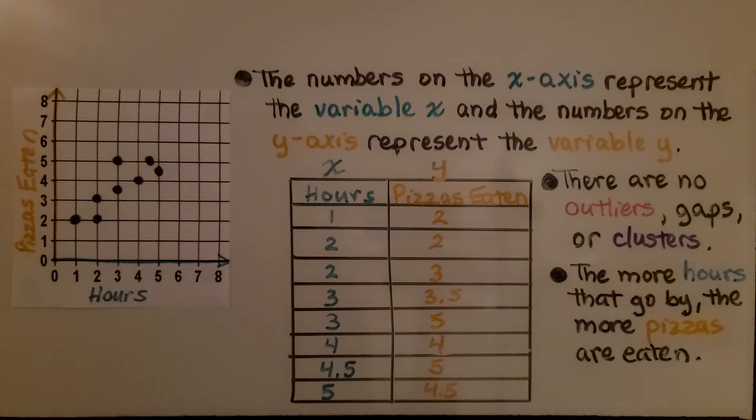For example, the pizzas eaten. There's no outliers, gaps, or clusters. The more hours that go by, the more pizzas are eaten.